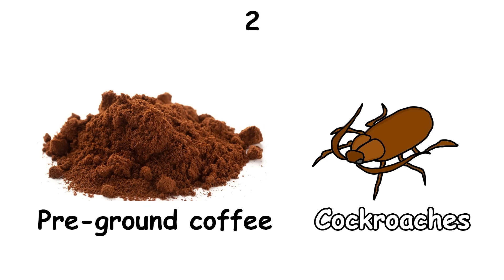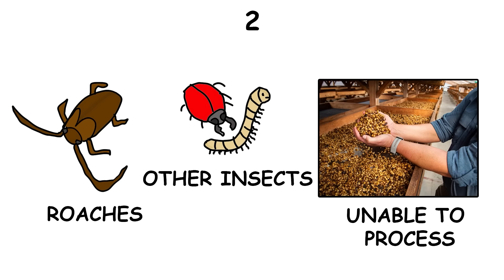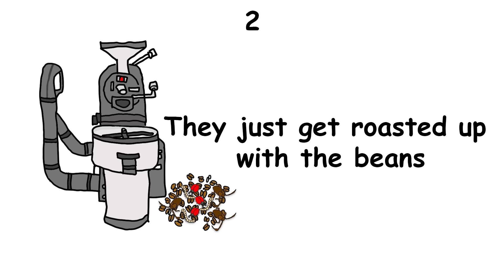Pre-ground coffee may contain cockroaches, as an FDA study showed that up to 10% of green coffee beans become infested with roaches and other insects. They're unable to get processed completely, so they just get roasted up with the beans.